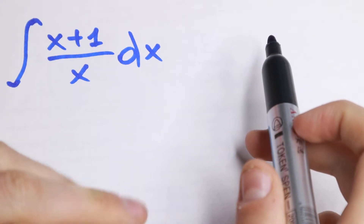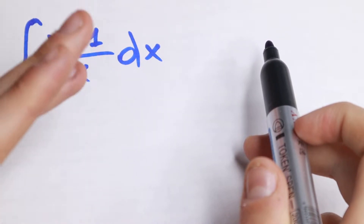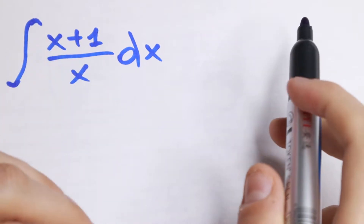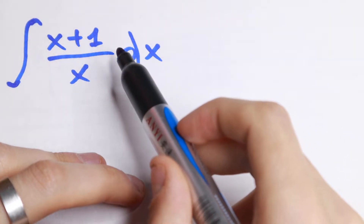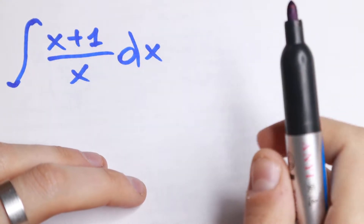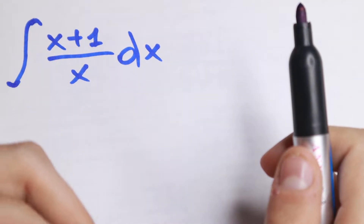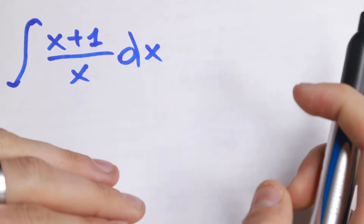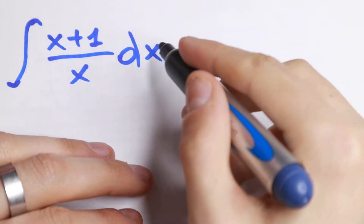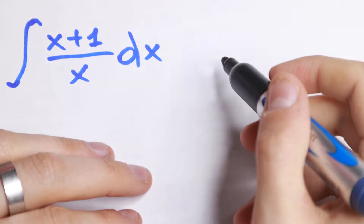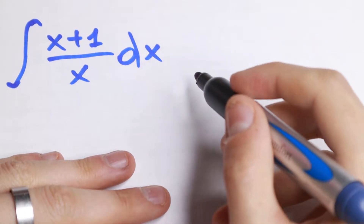We have an integral with a numerator and denominator. In most cases, an integral like that — if we have a numerator and denominator — is a hard one, because it's really hard to integrate it. But in our case I'm going to show you how to solve this integral really fast and give you a really good trick.